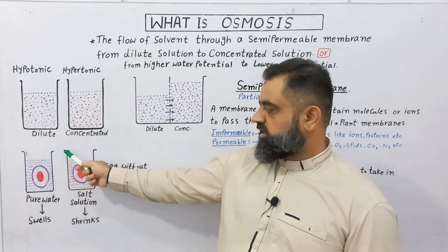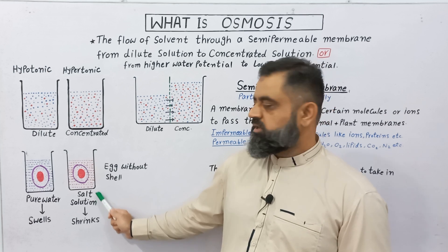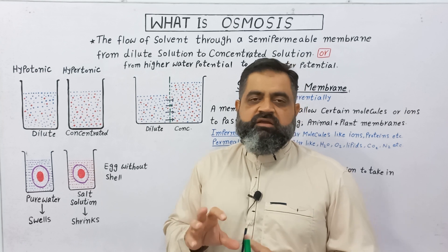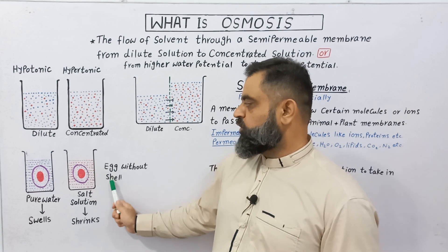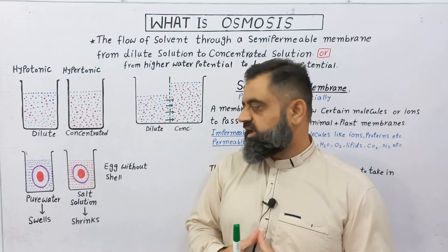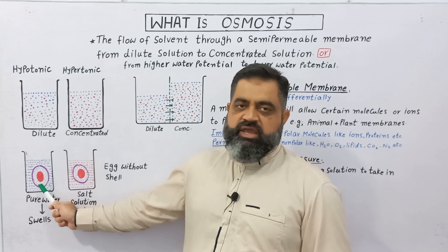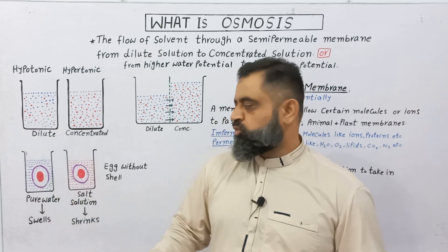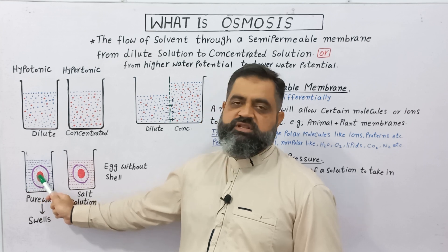In another experiment, I have taken a beaker with a concentrated salt solution inside. The same process is done with the egg — the shell is removed and the egg without shell is kept in this salt solution. After some time, the egg in pure water has gained water by endosmosis, because the water potential in the beaker is greater than the water potential inside the egg.